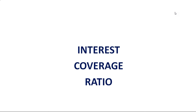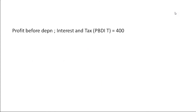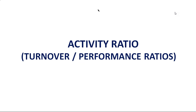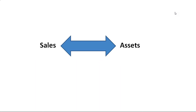My request to all of you is that I'm not covering all the ratios — I'm covering only those ratios which are very important from practical relevance and from an examination point of view, basically for professional course students. This is very important: activity ratios, which we call turnover ratios or performance ratios. Working capital turnover ratio is also part of activity ratio.